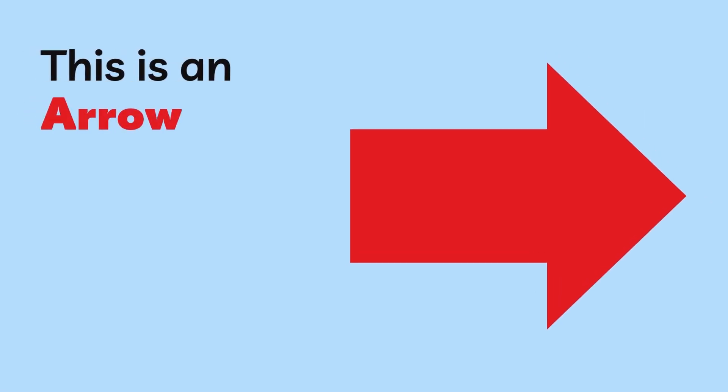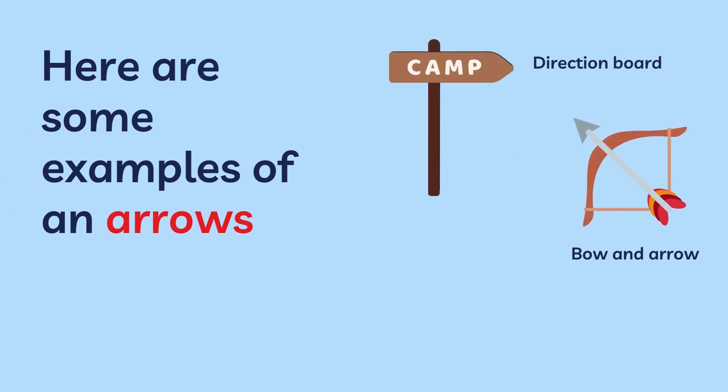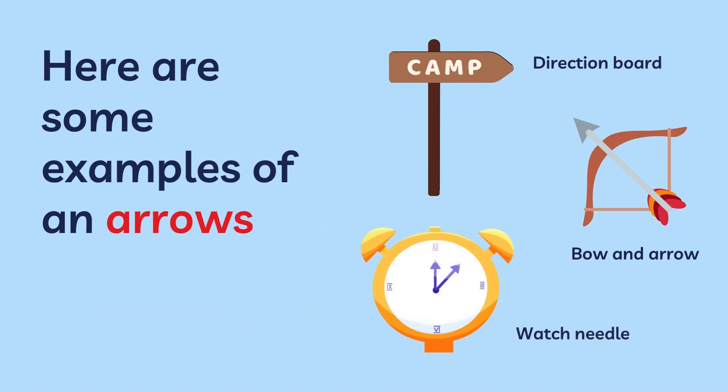This is an arrow. Here are some examples of arrows: a direction board, a bow and arrow, a watch needle.